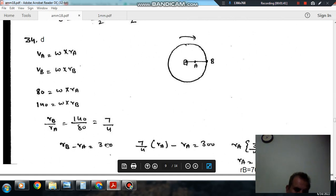So we can put rB equals 7/4 times rA and find rA. rA comes out to 400 mm. If we put rA here in this ratio, then